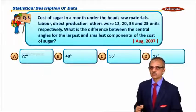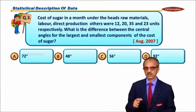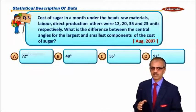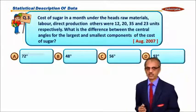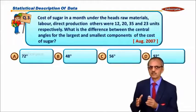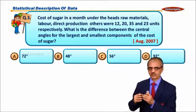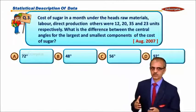The next one: the cost of sugar in a month under the heads raw materials, labor, direct production, and other were 12, 20, 35, and 23 units respectively. What is the difference between the central angles for the largest and the smallest component of cost of sugar?